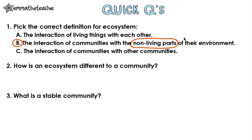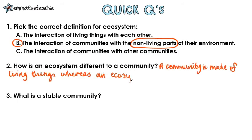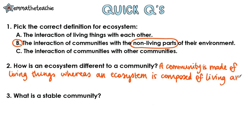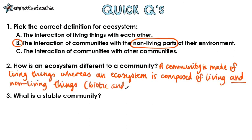Two, how is an ecosystem different to a community? Well, a community is made of living things, whereas an ecosystem is composed of both living and non-living things. You might have learned this as biotic and abiotic factors. We'll learn more about this in the next video.